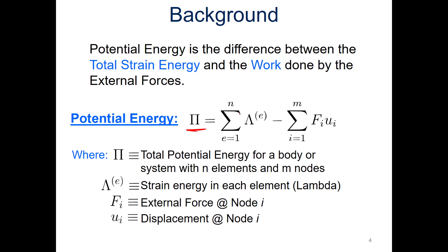The potential energy is the sum of all the strain energy for each element — we've got to sum up the strain energy we get from each element — and then we subtract off the total work done for all the elements involved. We're going to develop the strain energy piece and determine this work value as well, which is a little bit more straightforward.